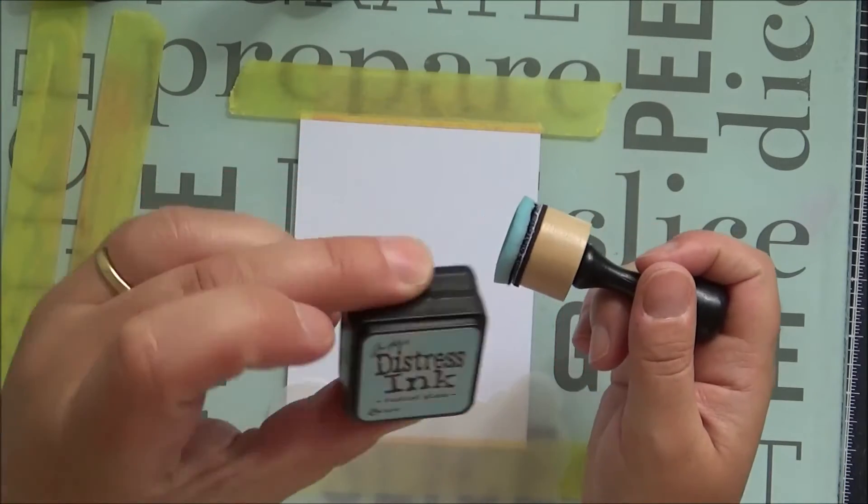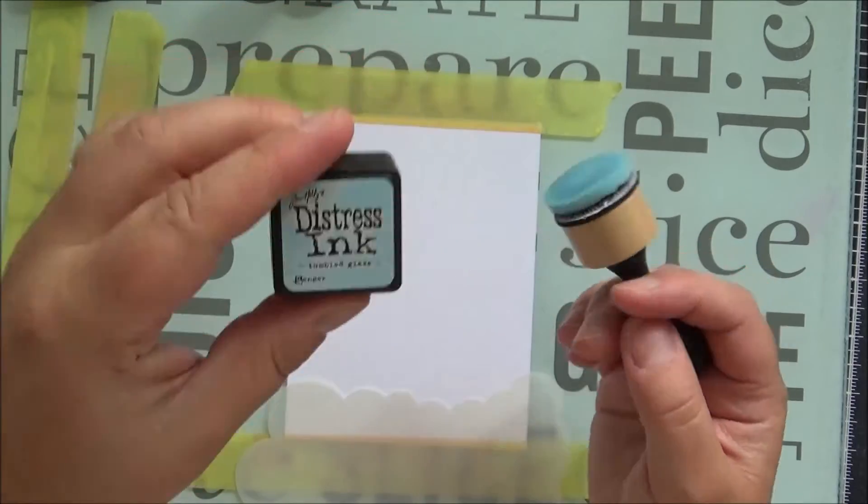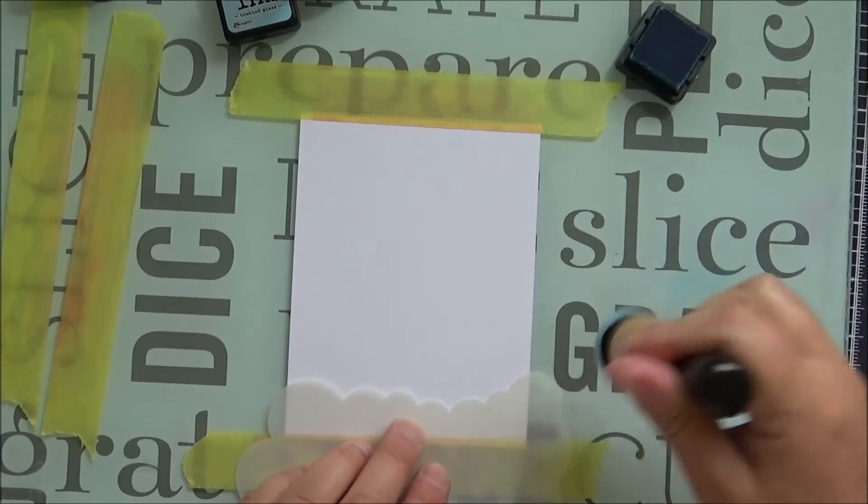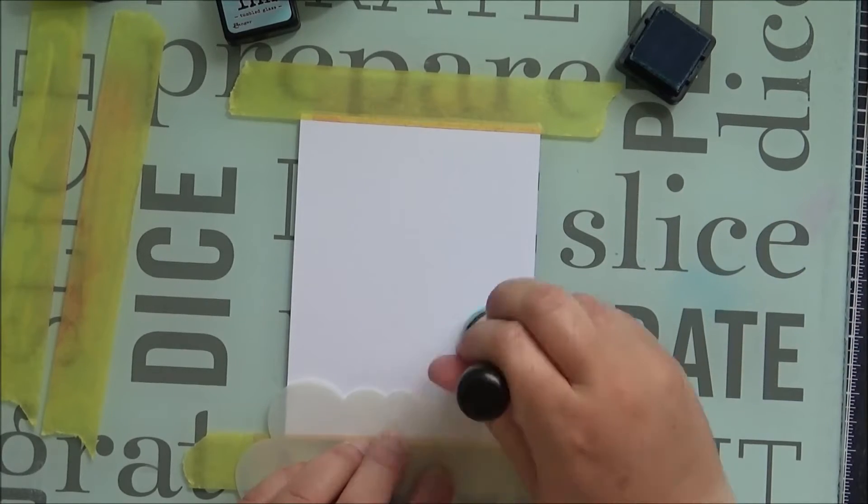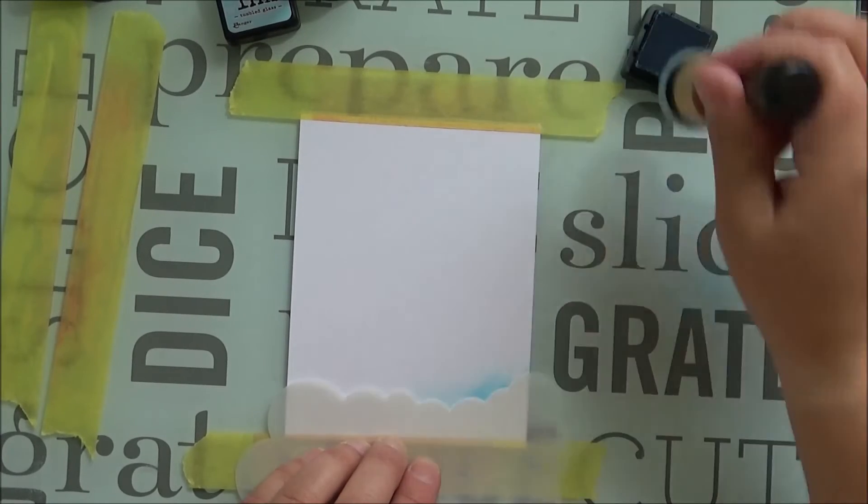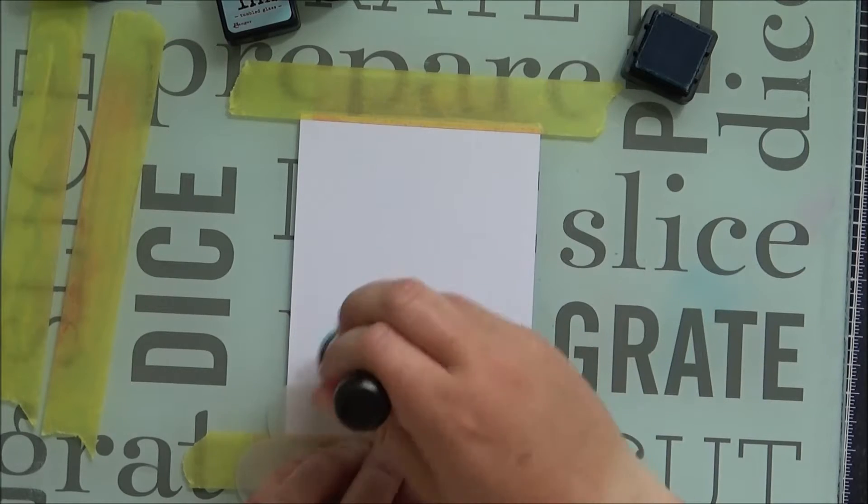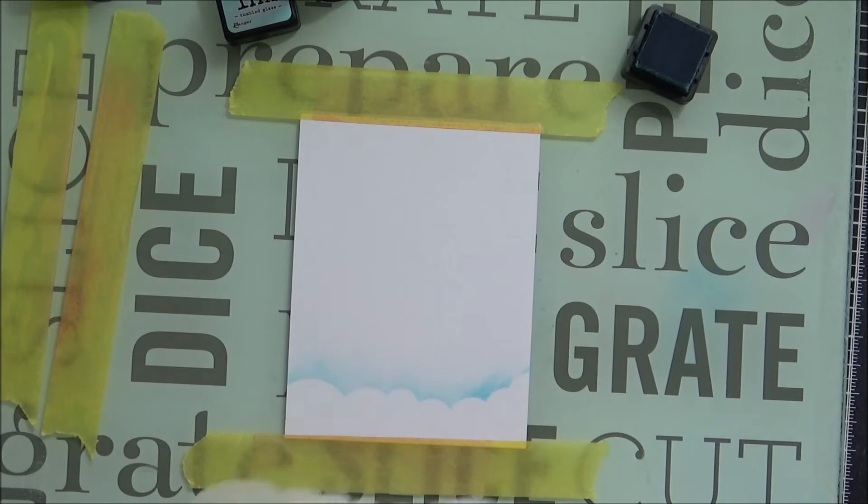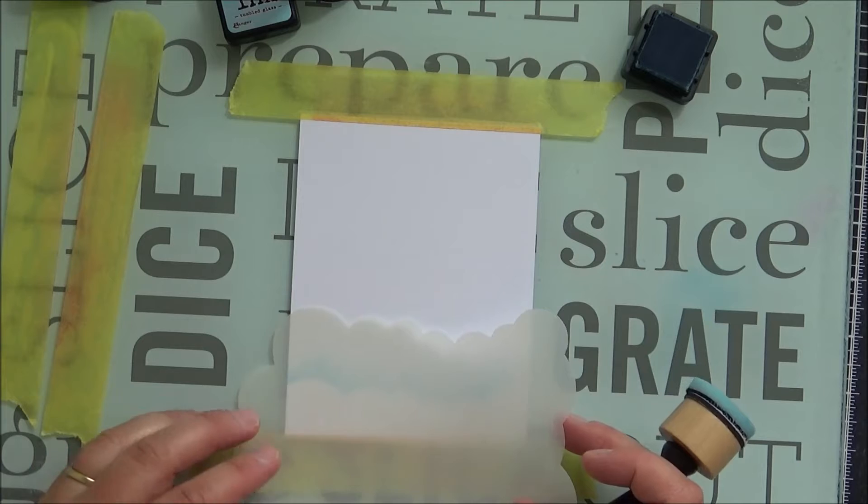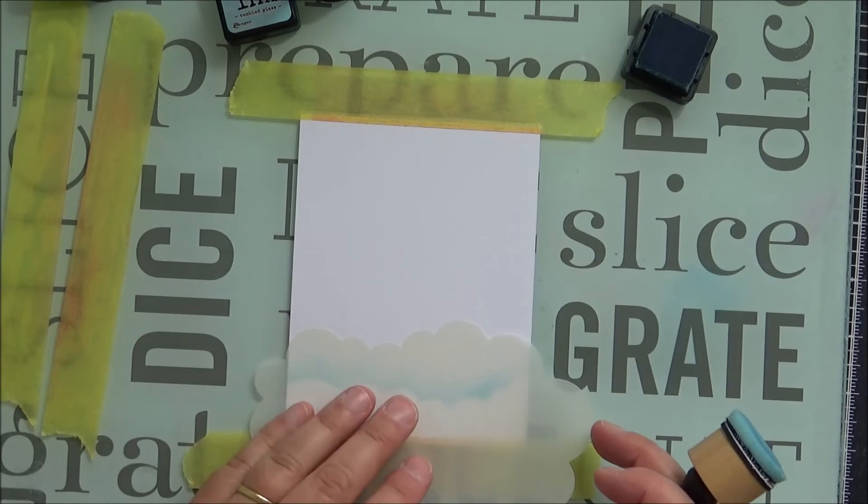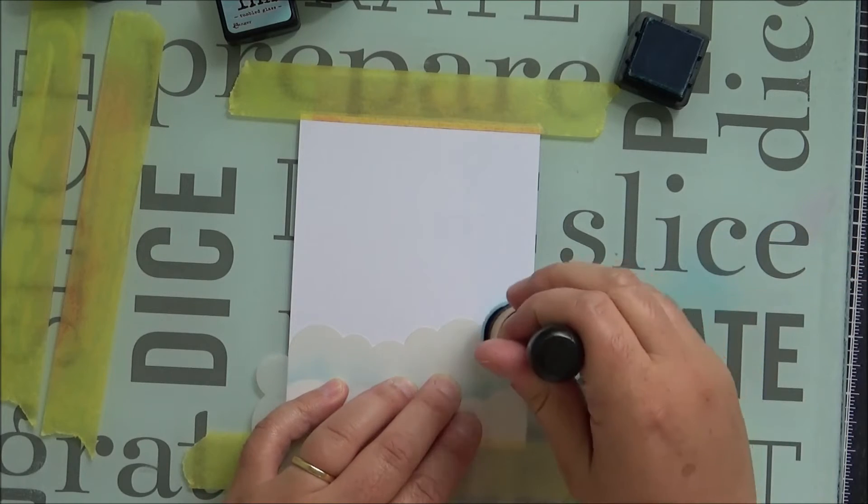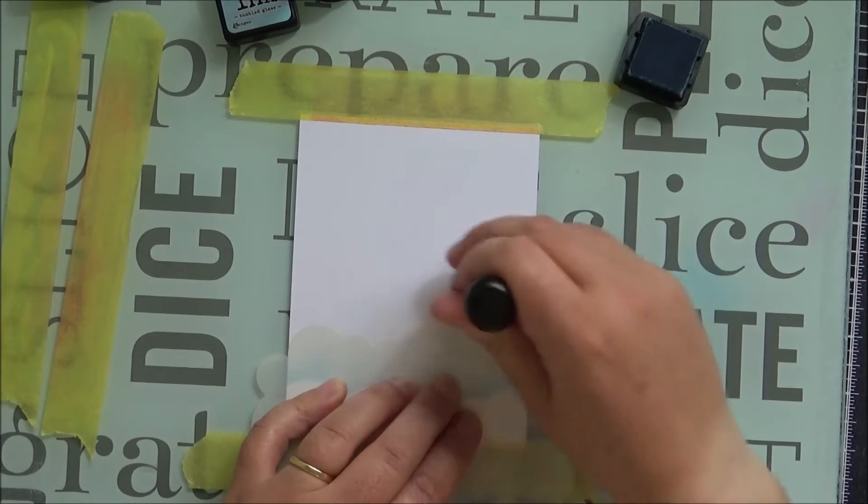I'm starting off with just some tumbled glass distress ink and the ink blender, which is what I would do before I bought my ink dusting tools. The only thing I had to blend with, or occasionally I'd use the little daubers as well. Isn't that stencil great? I love it's got four sides, you can make your clouds totally different.